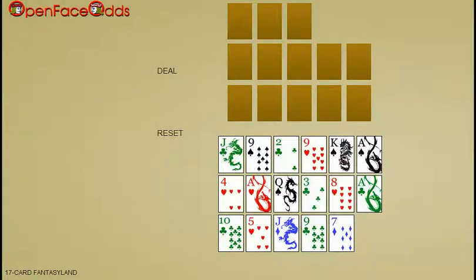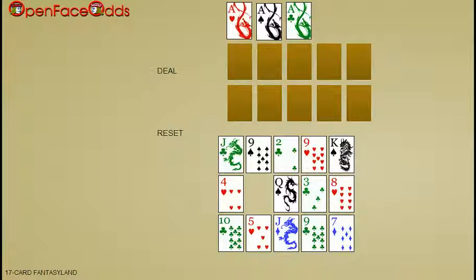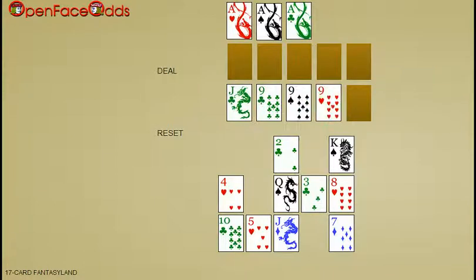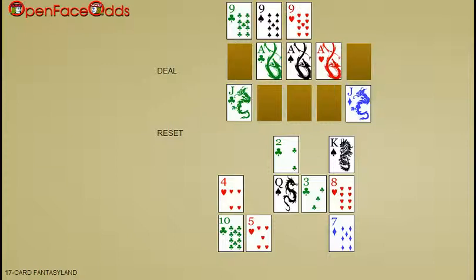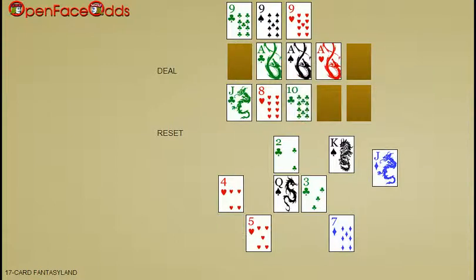No boat. Anytime I see a high set of trips, I'll put it in front and see if I can support it. In this case, I could not, but the trip nines work out after I figured out how to support them.